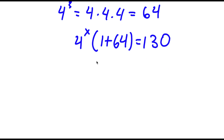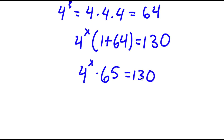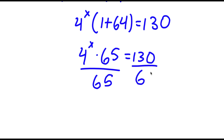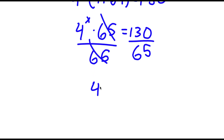Now 1 plus 64 is 65, so I have 4 to the power of x times 65 is equal to 130. Now we obviously want to isolate x here, so I'm going to go ahead and divide both sides by 65. These two cancel out, and I'll be left with 4 to the power of x is equal to 130 divided by 65, which is 2.